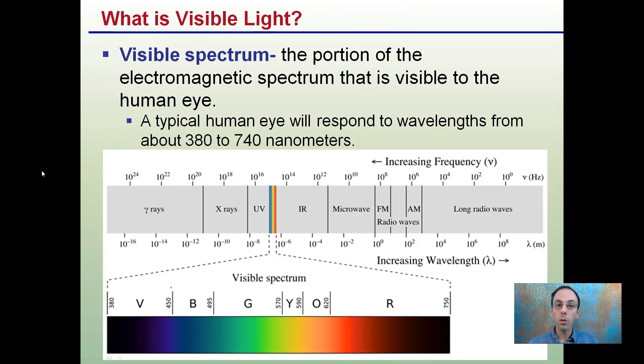So what's that visible light? Well, that visible spectrum is the portion of the electromagnetic spectrum that's visible to the human eye. The typical human eye will respond to wavelengths from 380 to 740 nanometers. Again, a very small range of the entire electromagnetic spectrum.